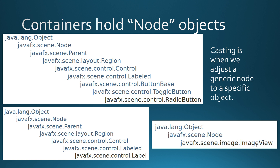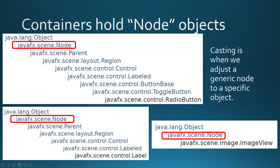Our image view is a node, which is an object. Radio buttons, if you go all the way up, they're nodes. Labels, they're nodes. So when the flow pane holds nodes, it doesn't actually know whether it's holding radio buttons or labels or image views — it looks at them all as nodes. So we have to tell it that we're actually holding image views, not generic nodes.